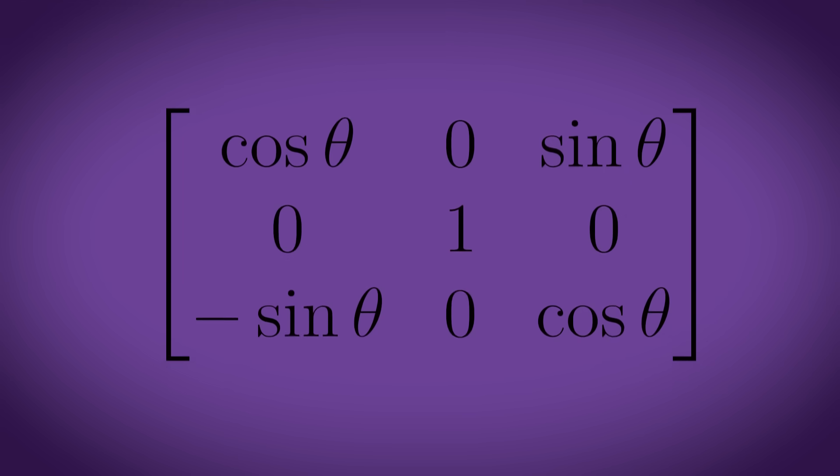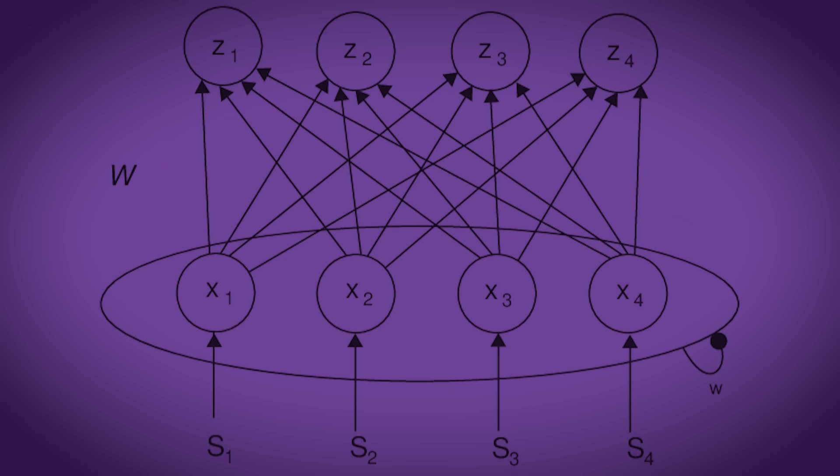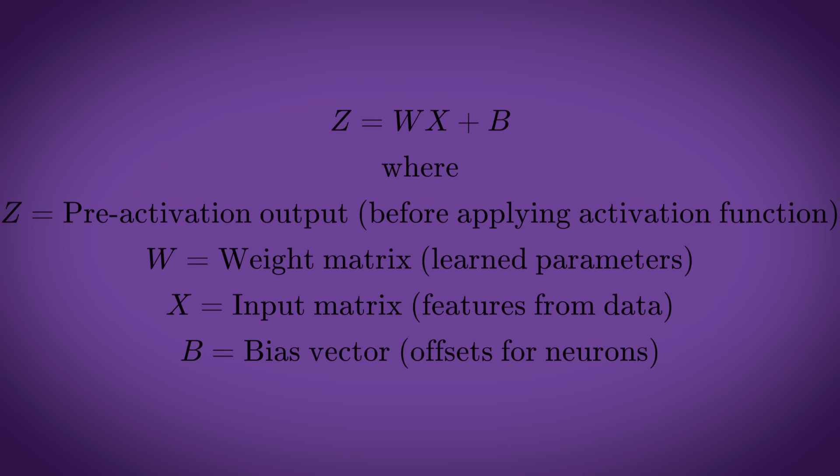Matrices are useful in 3D graphics. For example, if you want to rotate something about the y-axis, you take this matrix, multiply it by a position vector, and then you get the new coordinates of your rotated point. You can also build a literal neural network using simple matrix multiplication. Z equals WX plus B, where Z, W, X, and B are all matrices — that's all you need to make a neural network in mathematics.